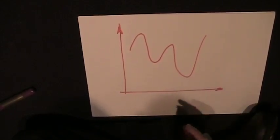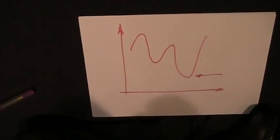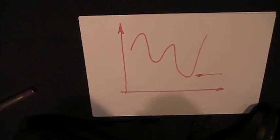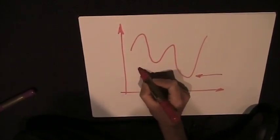When we look at this, clearly there is the global minimum, but we also have another minimum over here. This is a local minimum.